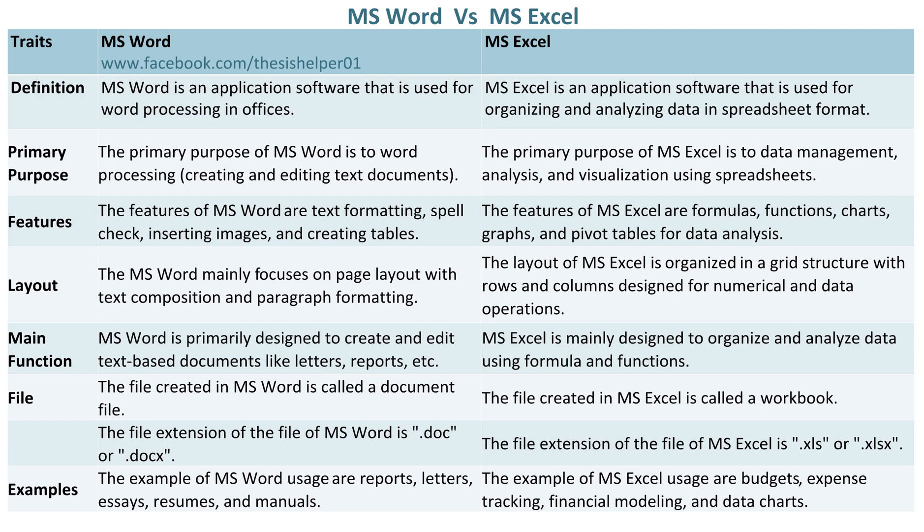MS Word mainly focuses on page layout with text composition and paragraph formatting. Whereas, the layout of MS Excel is organized in a grid structure with rows and columns designed for numerical and data operations.